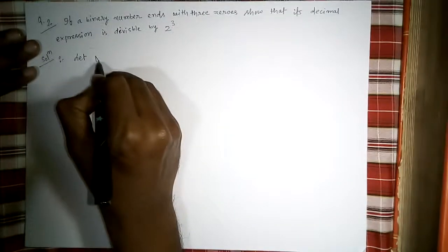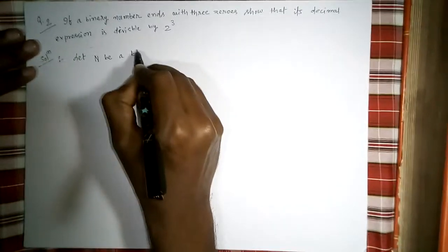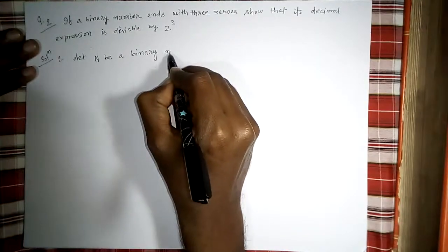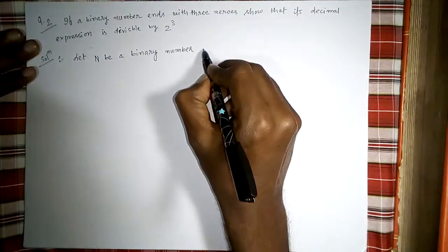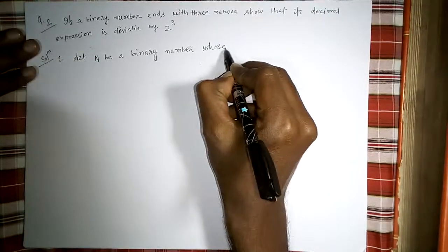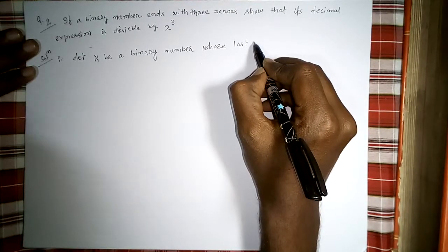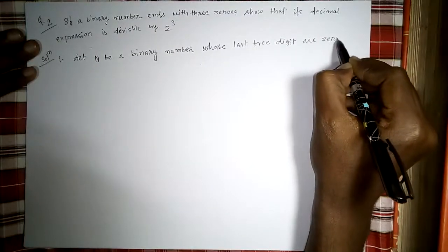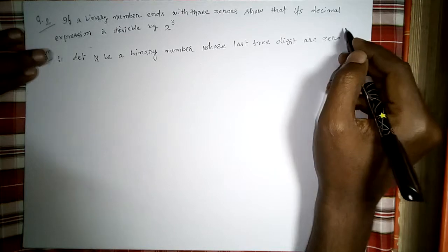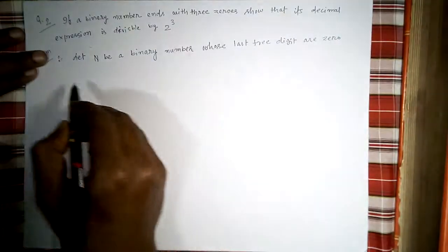Let n be a binary number — n is a binary number whose last three digits are zeros. We can write it as: let n be the binary number whose last three digits are zero.